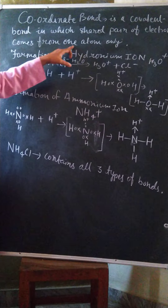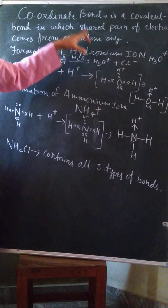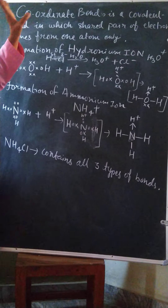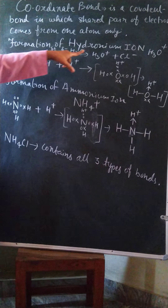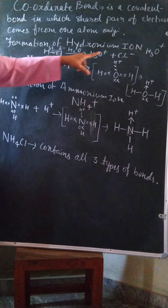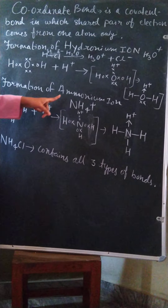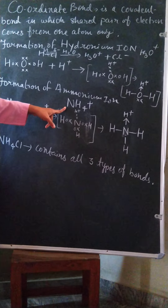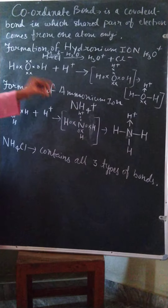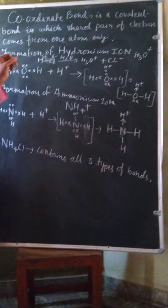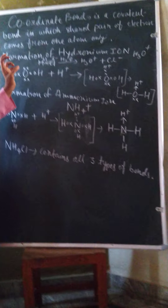It is a covalent bond in which the shared pair of electrons comes from one atom only. That is the definition of coordinate bond. Two examples of coordinate bonds are hydronium ion, with formula H3O+, and ammonium ion, NH4+. These two are the examples.